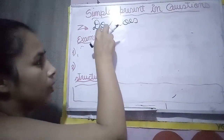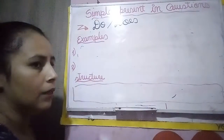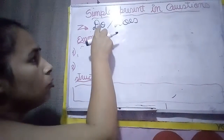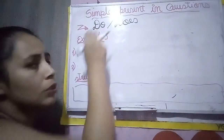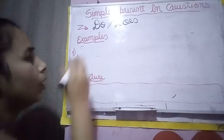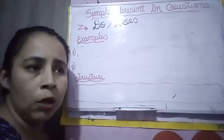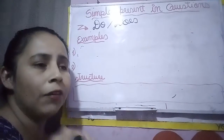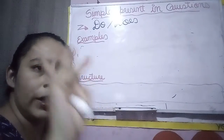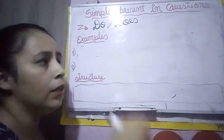Repeat after me: do, does. Now, when do you have to use the auxiliary do? You have to use the auxiliary do when you have as a subject: I, you, they, and we.